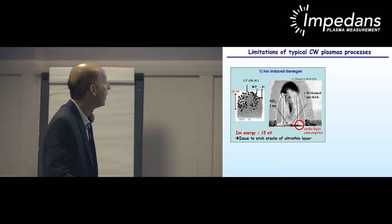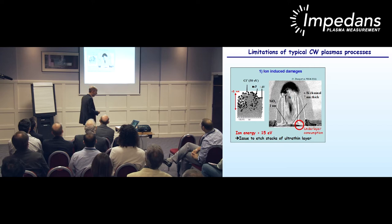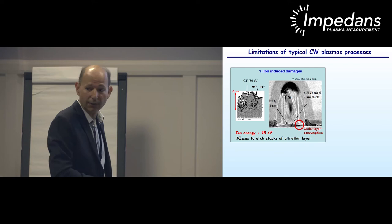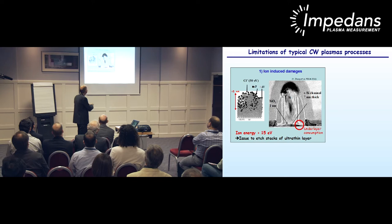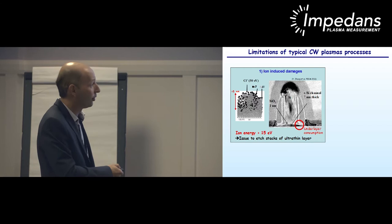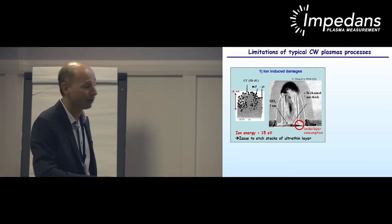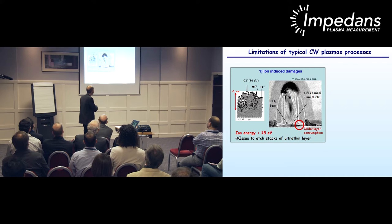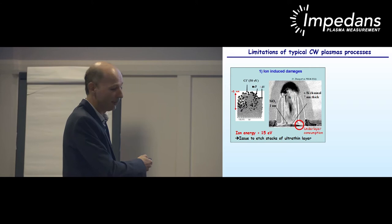I will show two important limitations of CW plasmas. The first is known as ion-induced damages. Surfaces bombarded by energetic ions are damaged, and the thickness of the damaged layer is about three nanometers, which is quite significant. This is a very serious issue when etching stacks of ultrafine layers. For example, when doing silicon gate etching, it's very difficult to prevent consumption of the underlayer, which was only five or seven nanometers thick initially. In a high-density plasma, the ion energy is always larger than the plasma potential, meaning it's higher than 15 eV, so there is no solution to this problem.